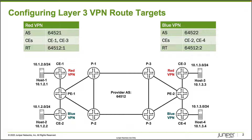CE1 has the network 10.1.2.0/24 with a host at 10.1.2.1. CE3 is also part of the red VPN with the 10.1.3.0/24 network and host 3 at 10.1.3.3. Notice how the prefixes in the red VPN are the same as those in the blue VPN. CE2 is part of the blue VPN with 10.1.2.0/24, and host 2 has address 10.1.2.2. Host 4 has address 10.1.3.4 inside the prefix 10.1.3.0/24.